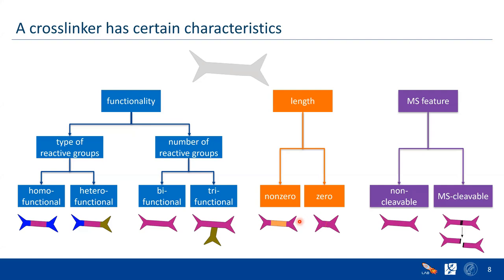The third characteristic is the MS feature. We have two main features here: the cross-linker can remain intact during MS analysis, and then we call them non-cleavable. Or the cross-linker can be cut into two halves because of a labile bond, and then we will have two parts of the cross-linker.